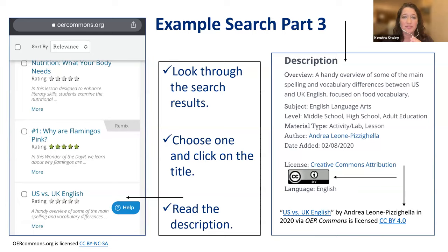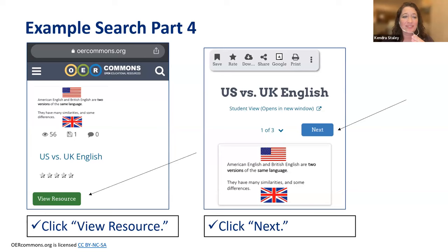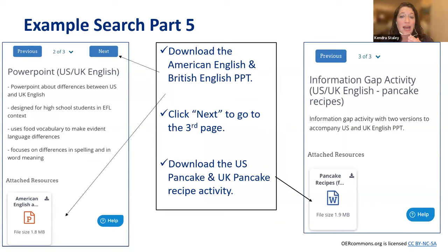So then you go on to the next step — you want to click view resource, then click next. Then you want to download the American English and British English PowerPoint. I encourage you to look at these materials and save them either to your cell phone or computer in advance in case you don't have good access to Internet at your school. Click next to go to the third page, and then download the US pancake and UK pancake recipe activity. For this resource, the teacher uploaded a PowerPoint and a Word document. Sometimes teachers will upload lesson plans, videos, PDFs, or pictures — it really just depends on what the teacher created.